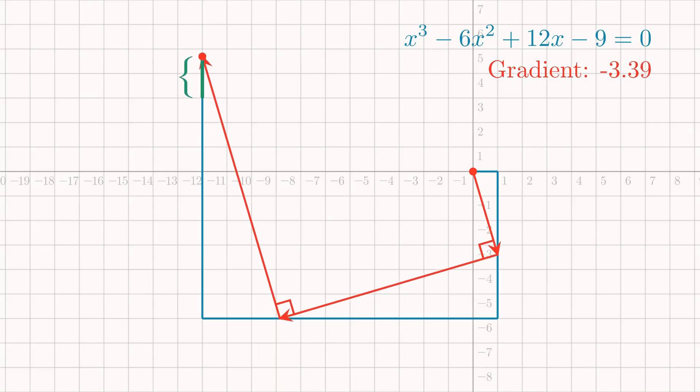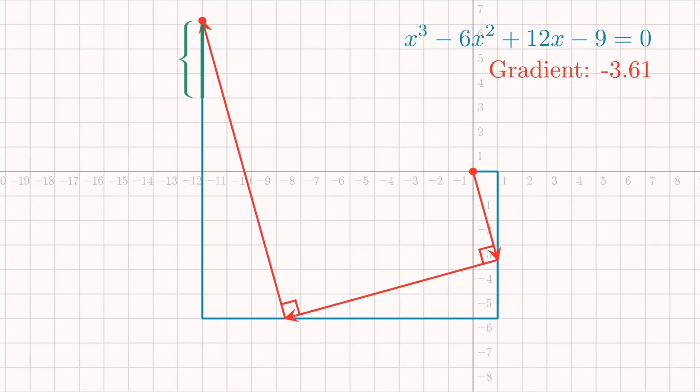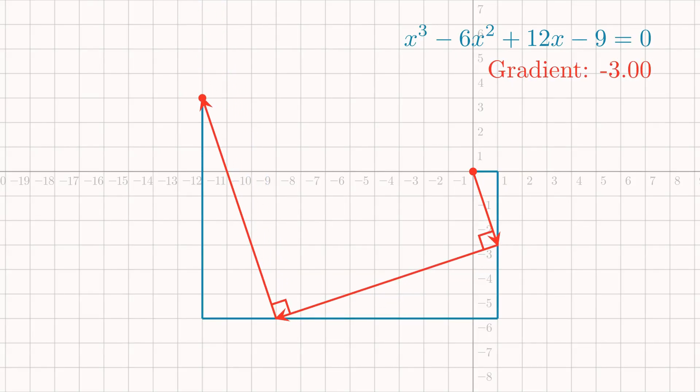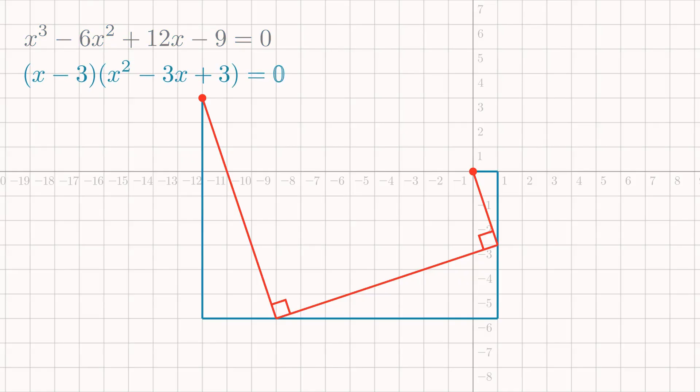But if we keep going, it seems as if we will never reach another solution, as the green section keeps getting further from zero. This is an example of a cubic with just one real root. Let's solve it. We can rewrite the cubic polynomial in its factorized form, as shown below, which is consistent with x equals 3 being a solution. To find the other two solutions, we need to solve the quadratic factor when it is equal to zero.